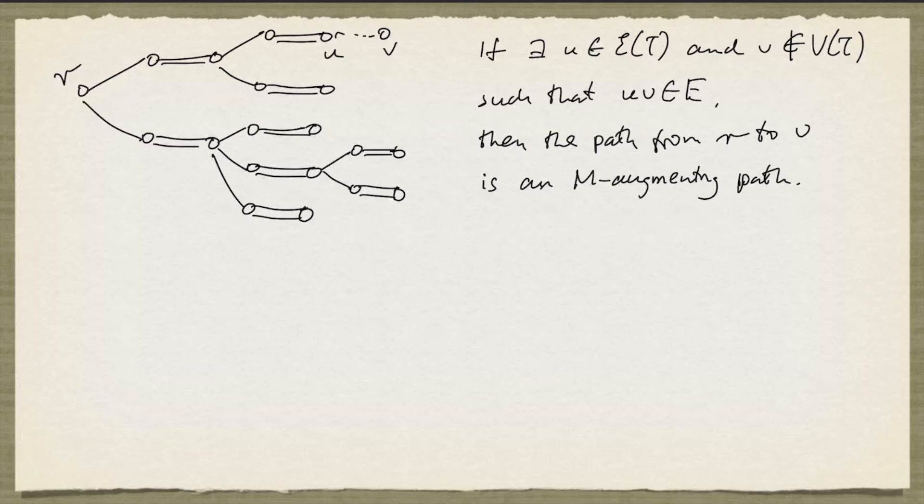So if we have such a case, we can find an M-augmenting path. But what if that's not the case?